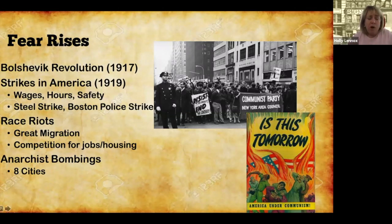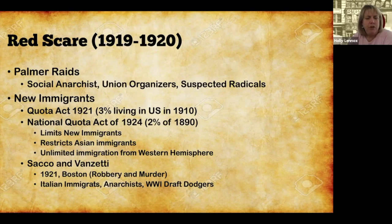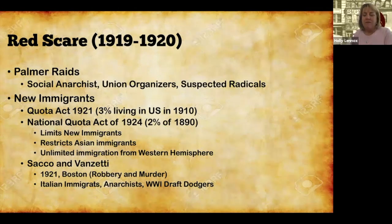All of this built up to the first Red Scare in America. The first major response was the Palmer Raids. Palmer, the Attorney General of the United States, put together a task force to put down anarchist movements. They went out raiding, arresting, and deporting anyone they believed to be a social anarchist, a union organizer, suspected radicals, or a Russian immigrant who was a union organizer. Deportations and arrests took place on a wide scale during this time.